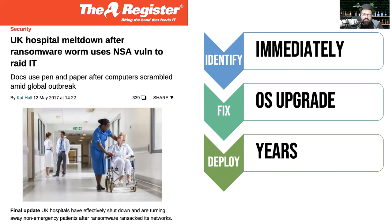Here are a couple of examples. Three years ago, a UK hospital meltdown happened because of a vulnerable operating system. There was ransomware and the hospitals realized they couldn't do surgeries because their computers were locked and all their data was encrypted. The problem was they used Windows XP, which hadn't been supported even back in 2017. They didn't update it, which is why they were vulnerable. Operating system upgrade was the fix, but it took them years to actually upgrade, and this is why they suffered.